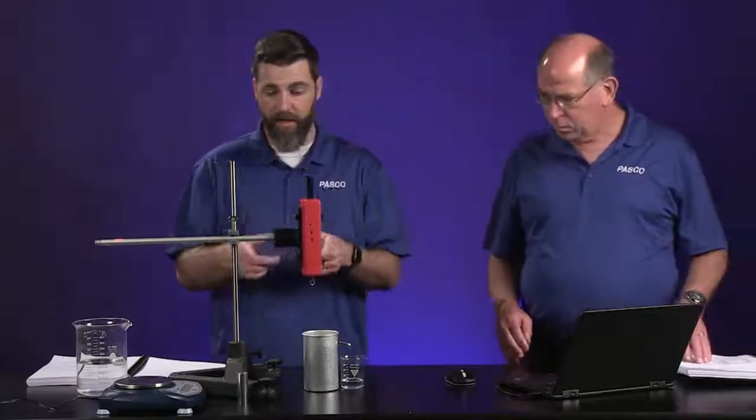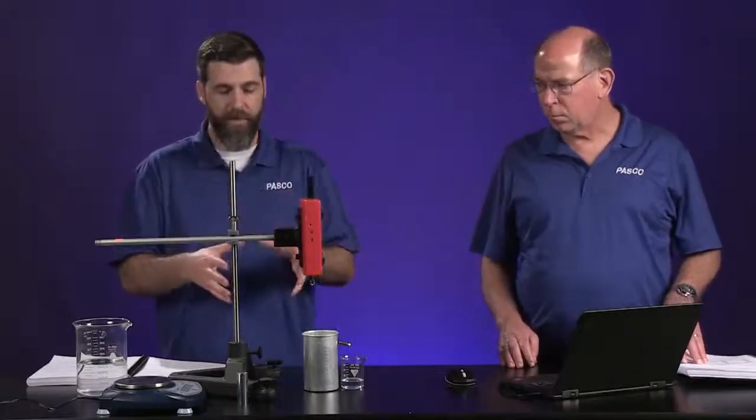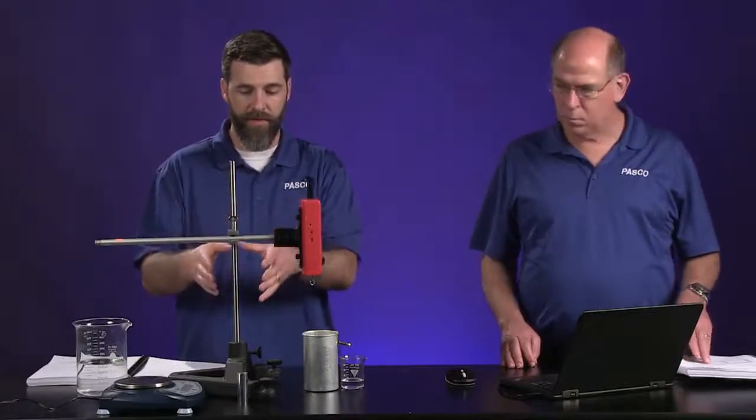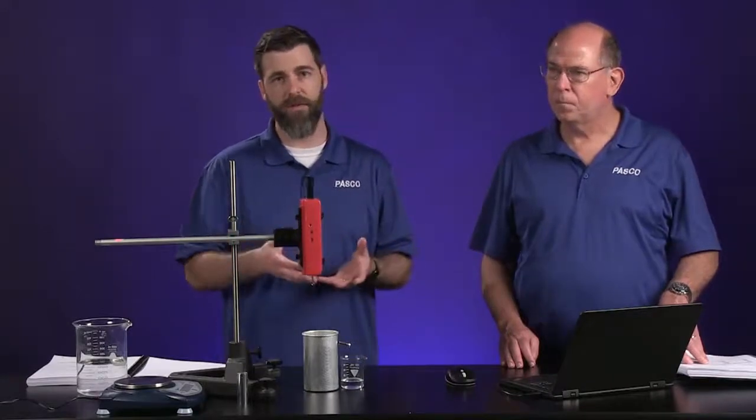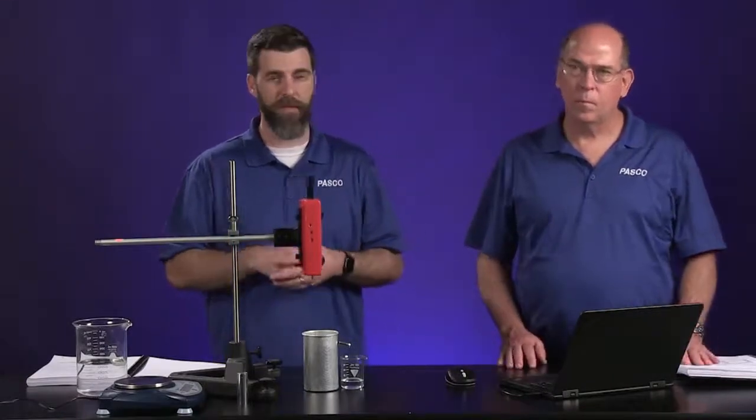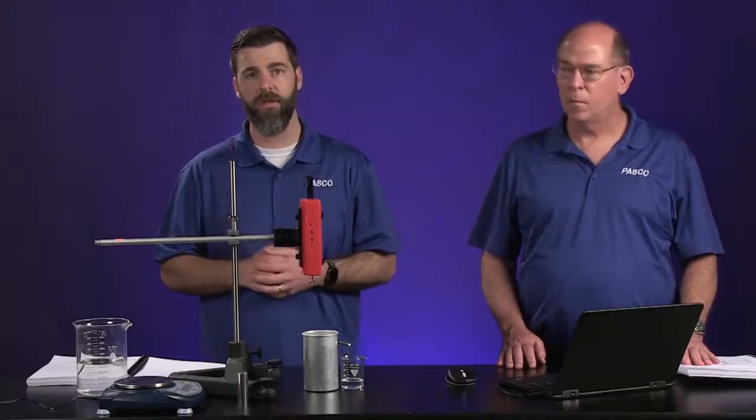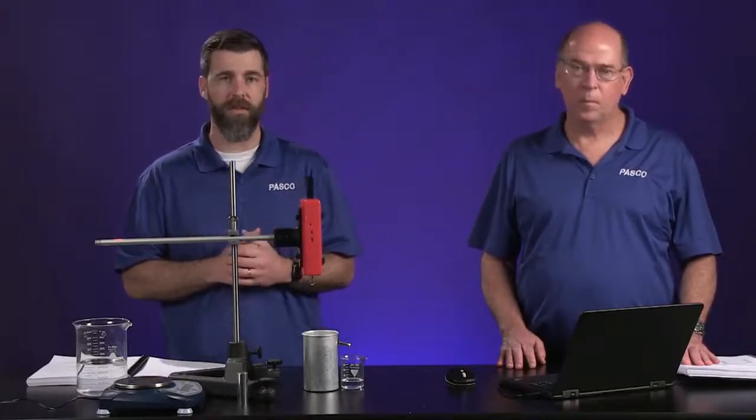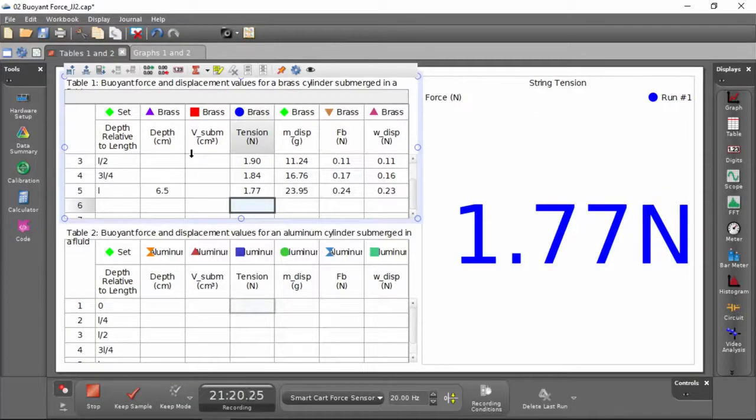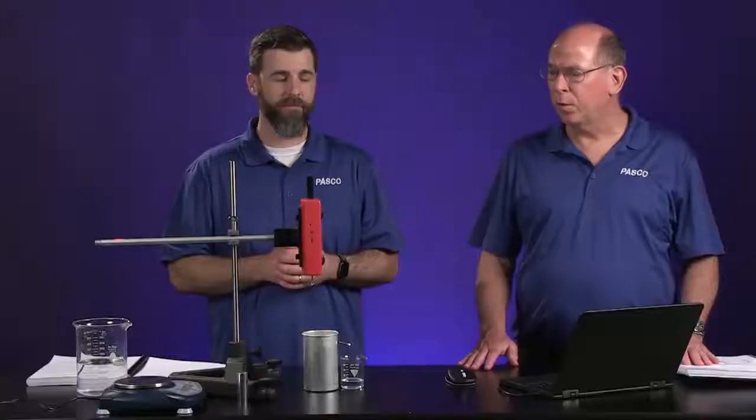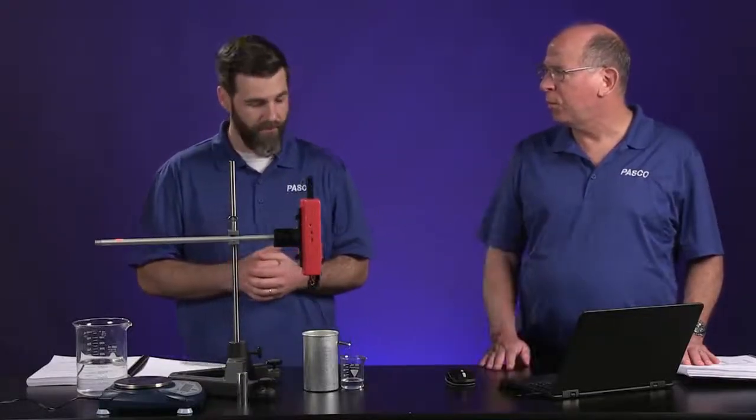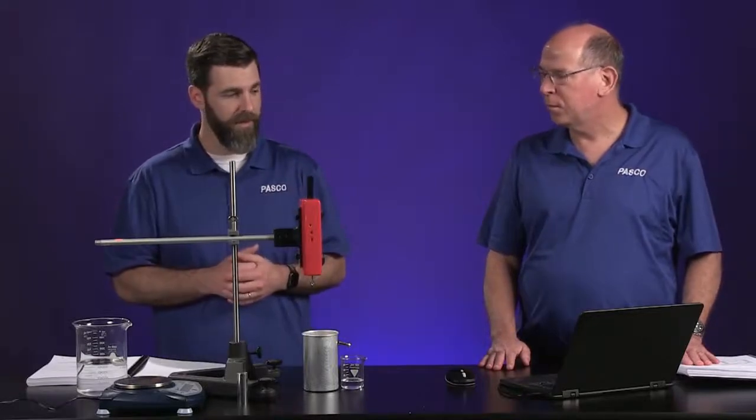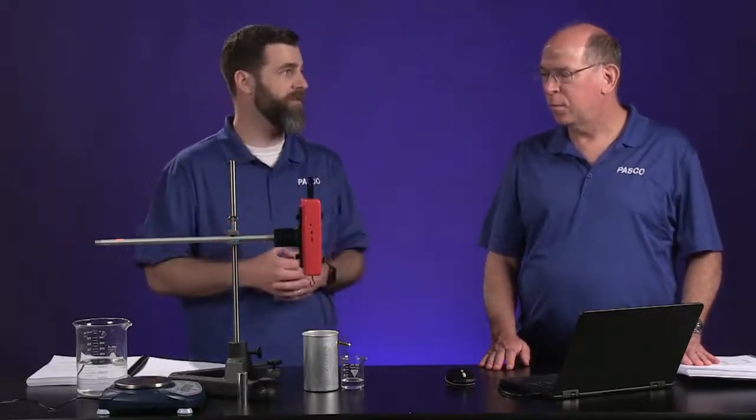And then we're going to repeat this experiment using the aluminum cylinder and we're going to follow the exact same procedure. So we're just going to provide the data that we collected for that separately. It'll be in with the brass cylinder data when you go into the file. So aluminum cylinder, what would be different about that? It's still metal. Why would we do that? The densities of the two metals are different.